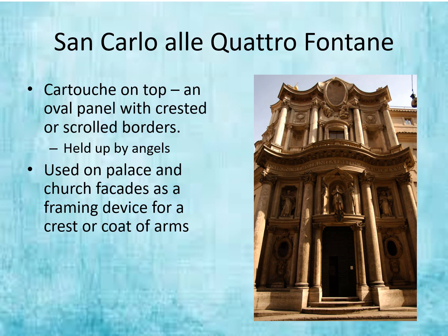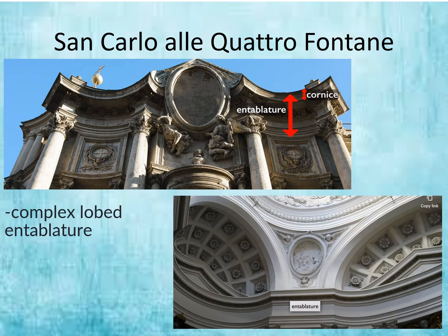You cannot help but notice the cartouche on top—an oval panel that has crested or scrolled borders, held up by angels. Notice how these angels bring dynamism even to something as minimal as this cartouche. This was used on palace and church facades as a framing device, often for a crest or coat of arms.